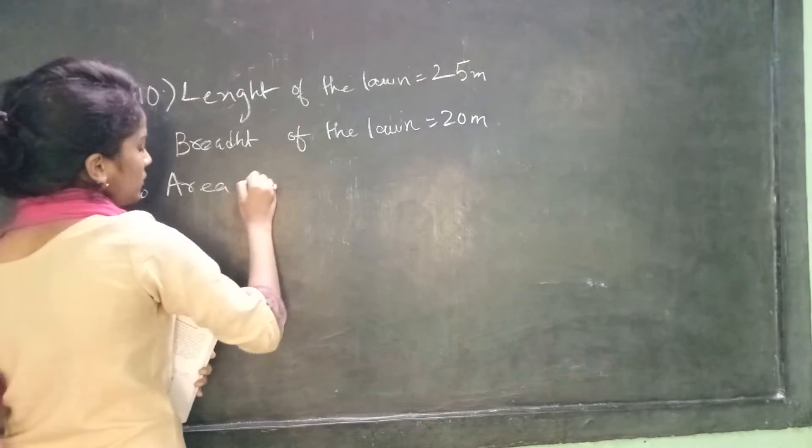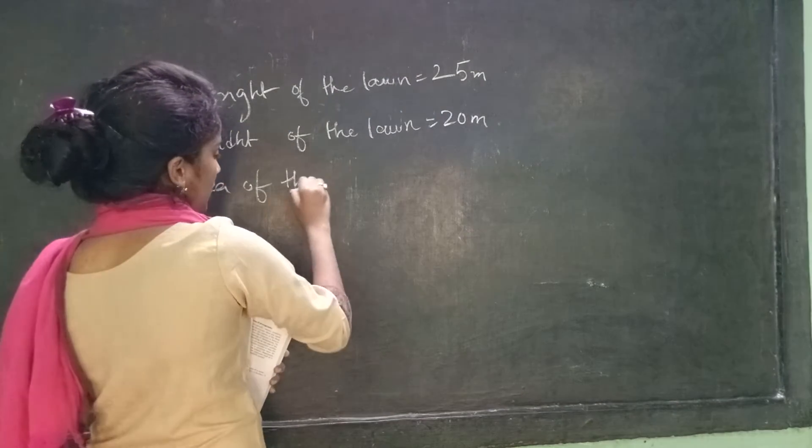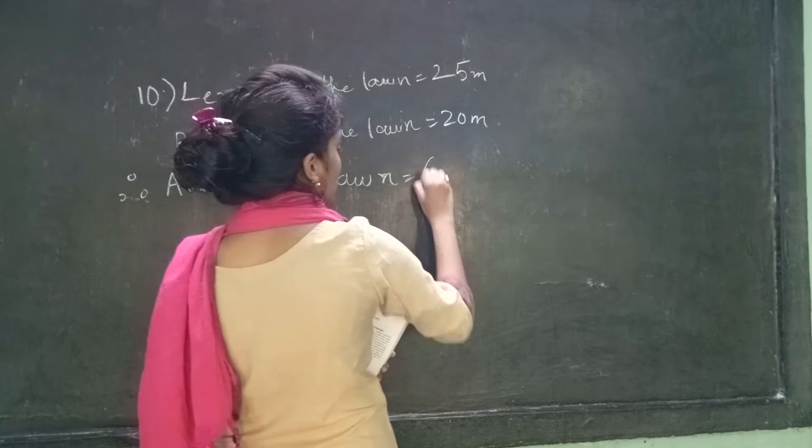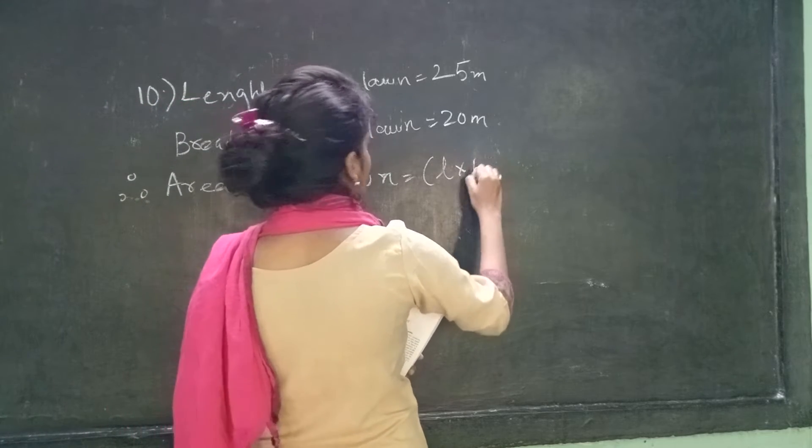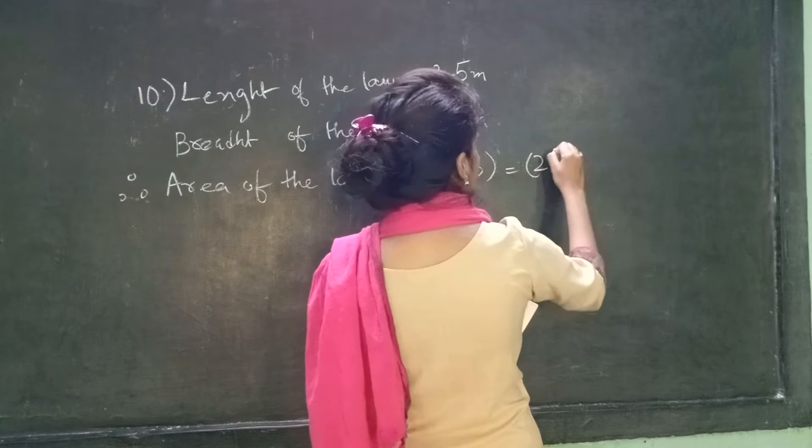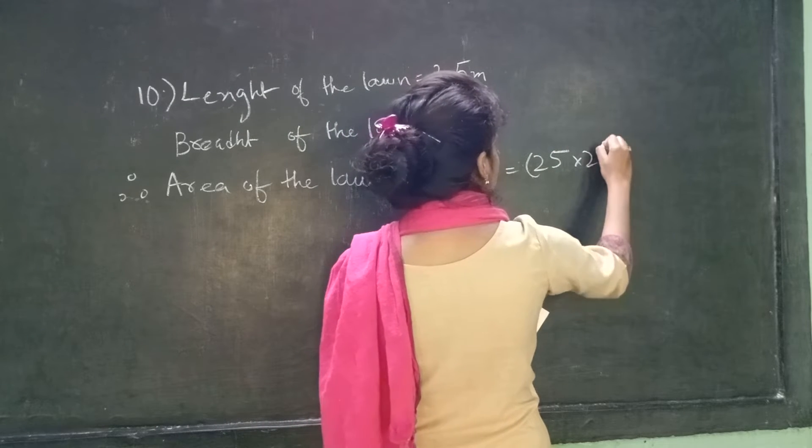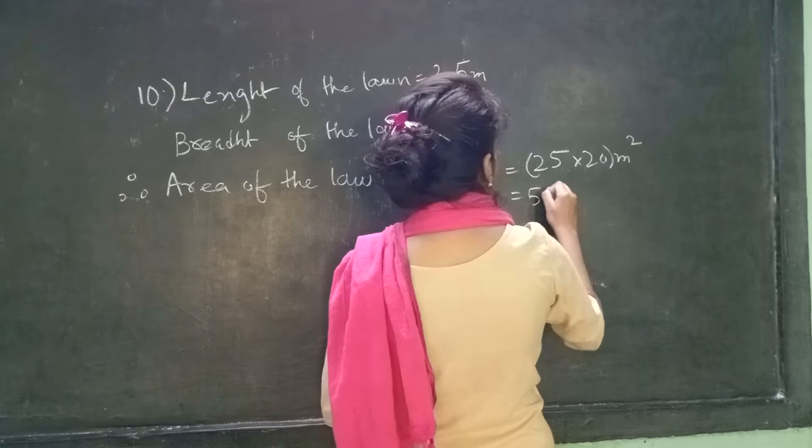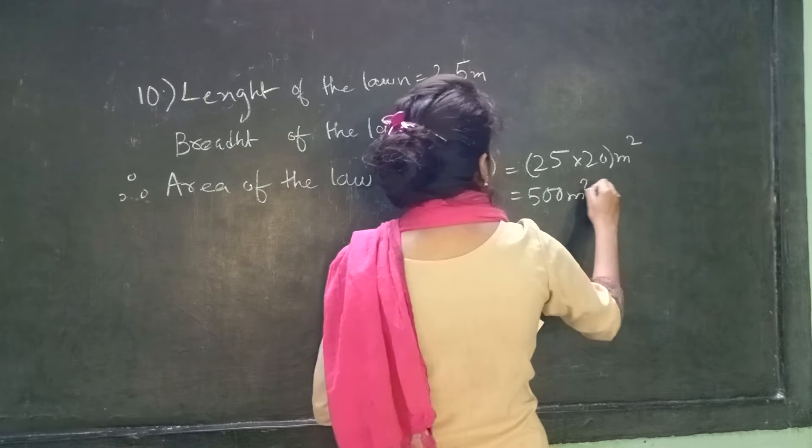Therefore, area of the lawn. Area of the lawn is equals to length into breadth, which is equals to 25 into 20 meter square, which is 500 meter square.